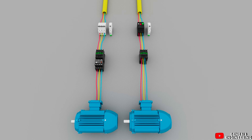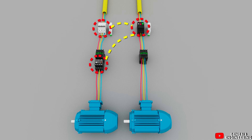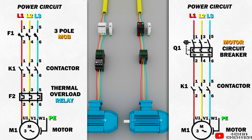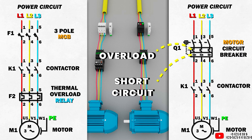We can already see that in the circuit with the motor circuit breaker, the 3-pole MCB and the thermal relay were not used — as I said earlier, the motor circuit breaker replaced both the MCB and the thermal relay. Also note that the motor circuit breaker symbol on the power diagram is different from the 3-pole MCB symbol. On the motor circuit breaker symbol we have both the short circuit protection symbol and the adjustable thermal overload protection symbol.